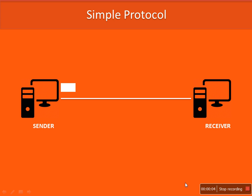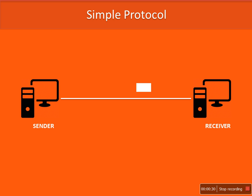Hello everyone. In this video I'm going to explain stop-and-wait protocol in networking. Before going to stop-and-wait protocol, just have a look at a simple protocol. This protocol actually keeps on sending packets to the receiver. We have a scenario where a sender has to send some packets to the receiver, and the sender will keep on sending packets. It might be possible that the receiver machine is not that efficient and is not able to process incoming packets quickly.